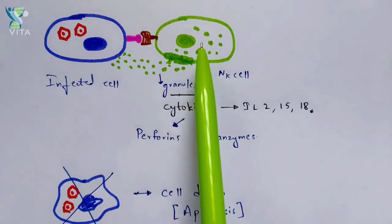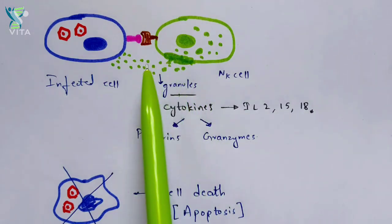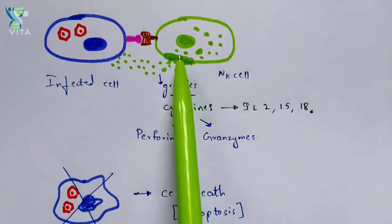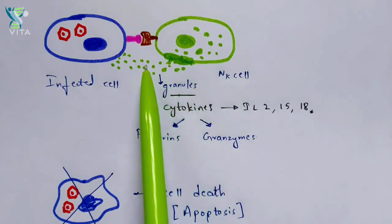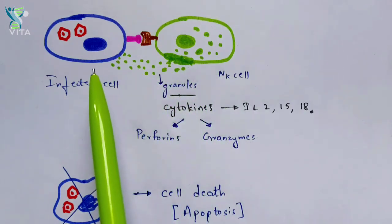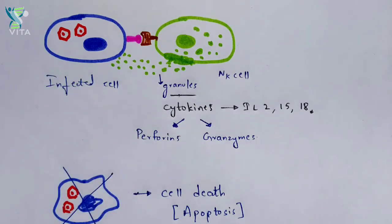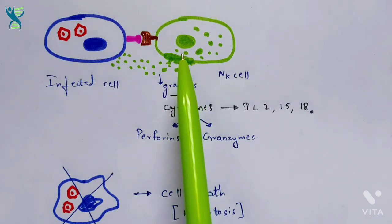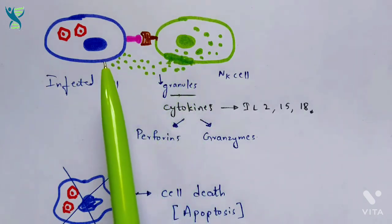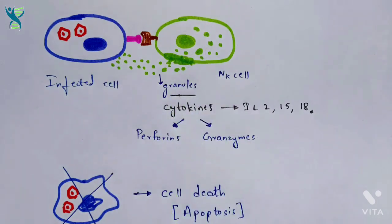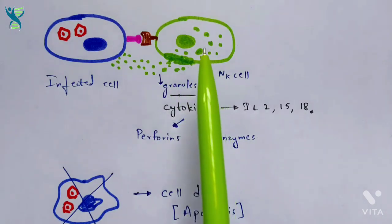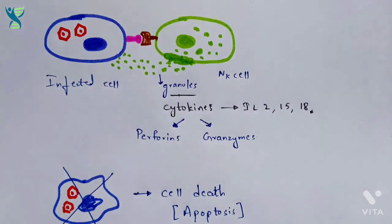Once there is interaction between both cells, granules will be released out. There is a kind of process where these granules lyse the cell membrane of the natural killer cell and start proliferating, attacking the infected cell. The granules are released from the natural killer cell by lysing its cell membrane and then get directed to attack the infected cell.